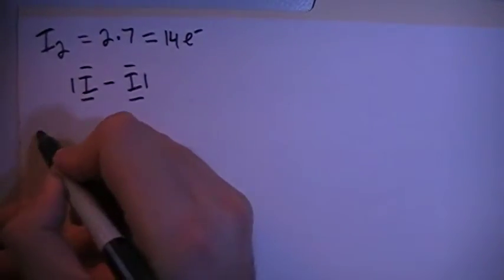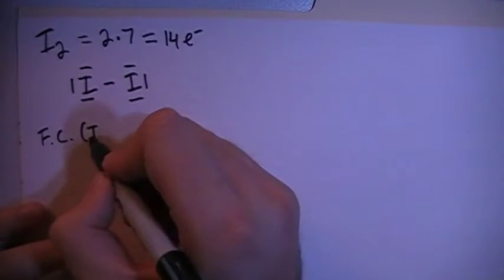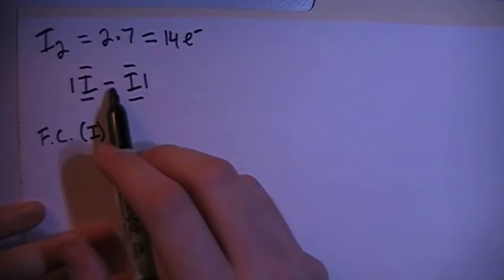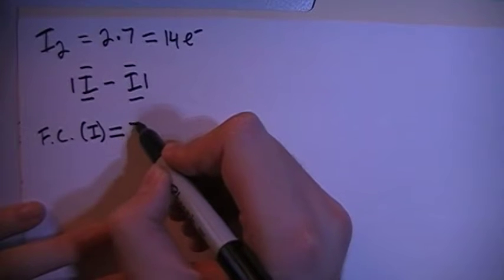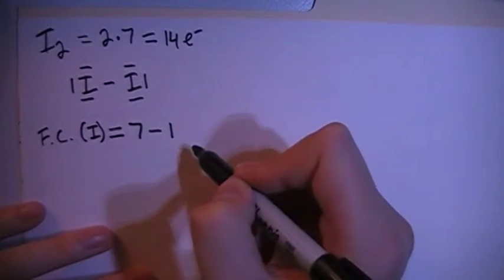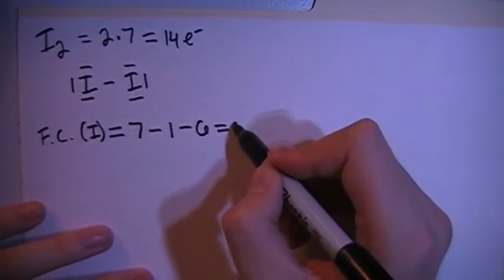We can verify that by checking the formal charge. So on the iodine, notice they both have six non-bonding electrons in one single bond, so their formal charges will be equal. The formal charge will be the seven valence brought in, minus the one single bond, minus the six non-bonding electrons for a formal charge of zero.